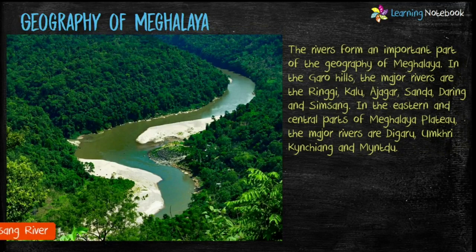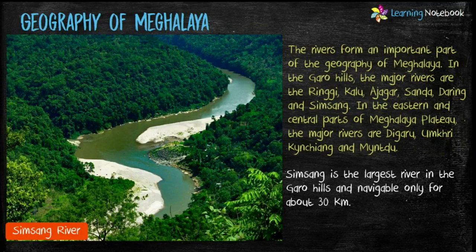The highest point of the entire state is the Shillong Peak. The rivers form an important part of the geography of Meghalaya. The Simsang is the largest river and it is navigable only for about 30 kilometers.